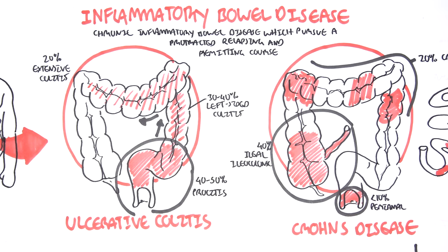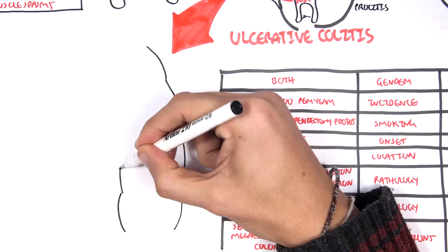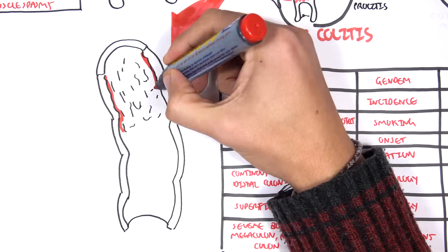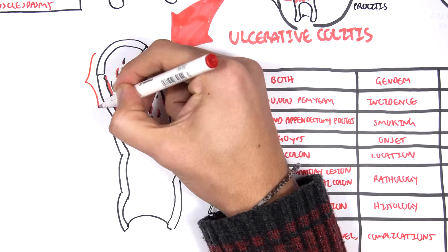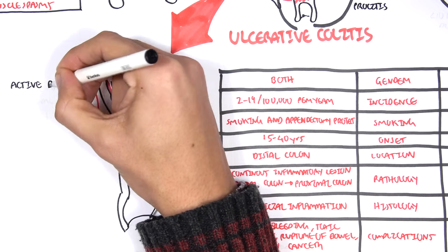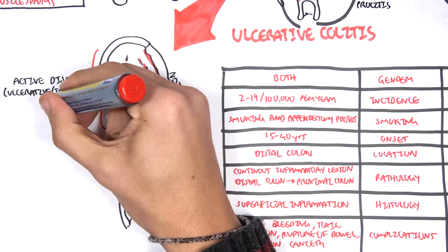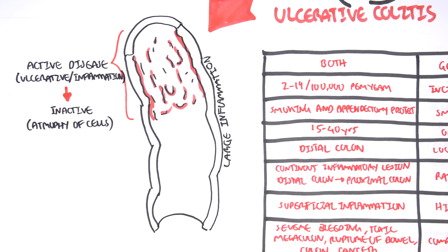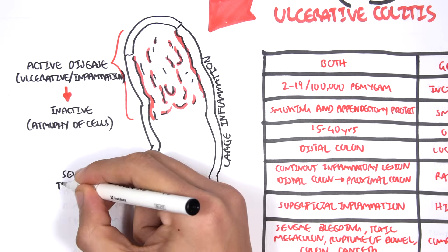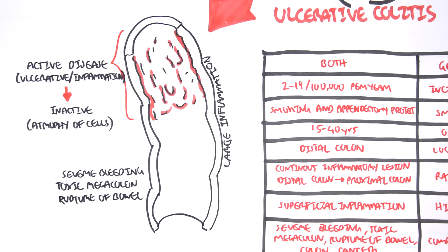Let us zoom into the ulcerative colitis affected colon. In ulcerative colitis, the disease is relapsing and remitting: when active, it causes ulceration and inflammation; when inactive, the cells are essentially dying — you get atrophy of cells following the inflammatory reaction. Complications such as severe bleeding, toxic megacolon, rupture of the bowel, and colon cancer can occur.